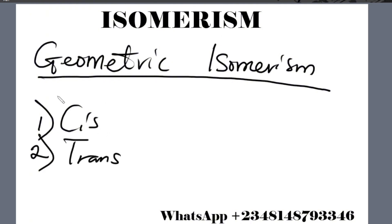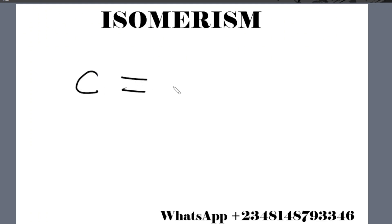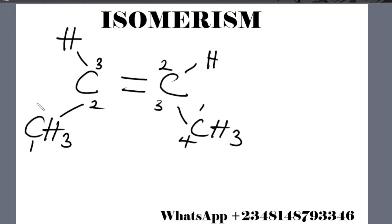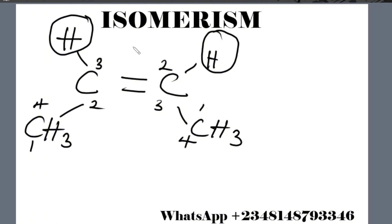Let's take an example of both. Assuming we have a structure — let's number it from left to right and right to left: 1, 2, 3, 4. We have two substituents: hydrogen and hydrogen. If you look carefully, the substituents are placed on the same level, so it is called cis.